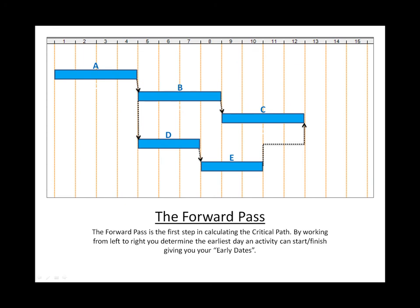Okay, now for the fun part, the CPM calculation. First you do what is called a forward pass. By working from left to right, you determine the earliest day an activity can start and finish, giving you what are called early dates. Let's do it.